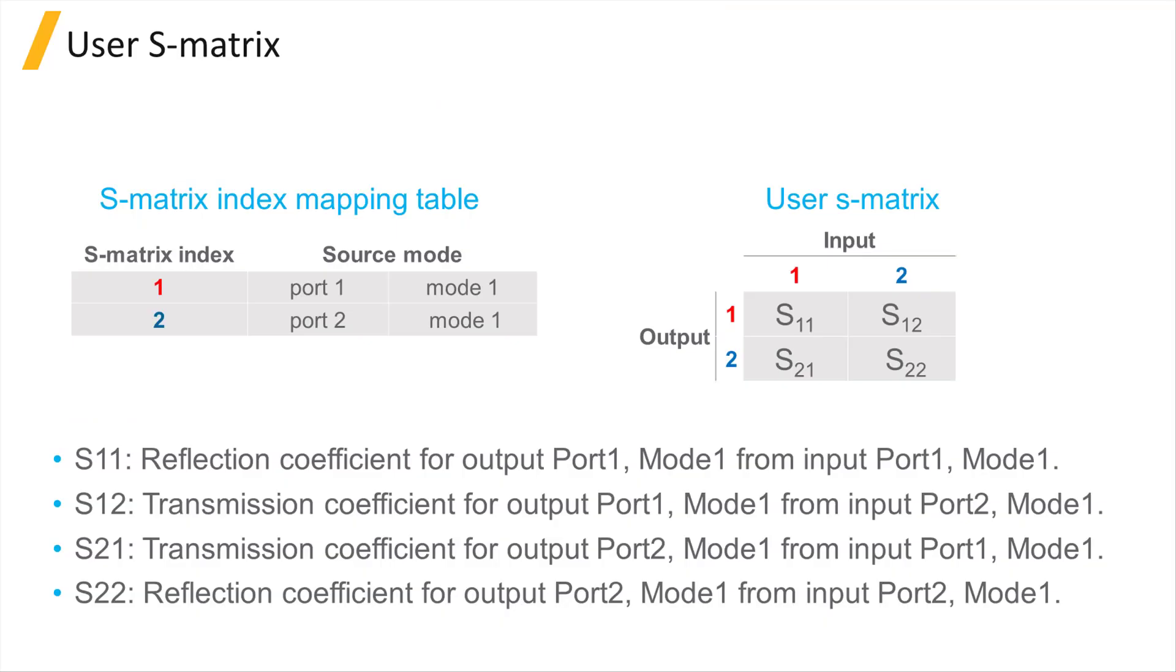In this S-Matrix index mapping table, you can see that there are two ports, port 1 and port 2, and each port has a single mode selected.